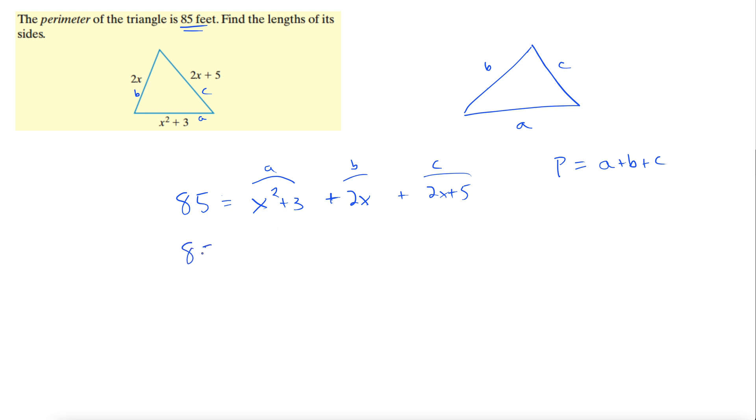Combine like terms. We have 85 equals x squared, and these two x's go together, and then 3 and 5 go together. So x squared plus 4x plus 8. Now let's get one side equal to 0. Anytime you have x squared on one side, you want to have 0 on the other side. Let's subtract 85 from both sides. We get 0 equals x squared plus 4x minus 77.